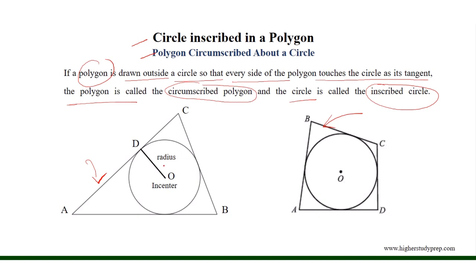As all of the sides of the polygon are tangents of the circle, therefore the radius is perpendicular to each of the sides. The center of the inscribed circle is known as the in-center with respect to the circumscribed polygon, and the distance from the center to any of the sides of the polygon is the radius of the circle.